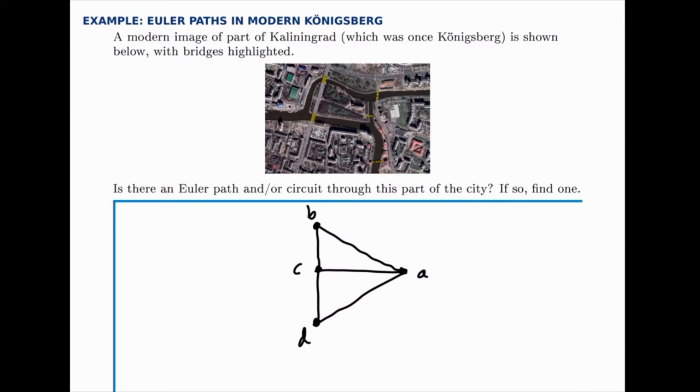So all we have to do is count the degrees of each node. So if we count the degree of A, for instance, we get 3, the degree of B is 2, the degree of C is 3, and the degree of D is also 2.